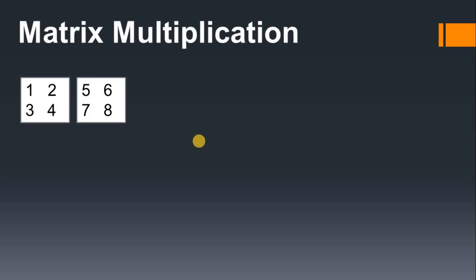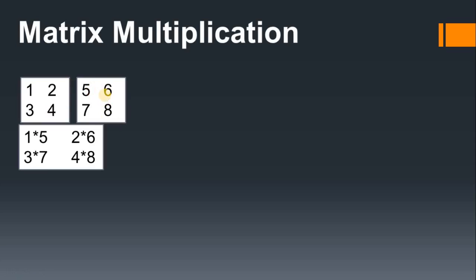Suppose you have two matrices — a simple two-by-two matrix. You can see two rows and two columns in the first matrix. The values are 1, 2, 3, 4 — so the first row values are 1 and 2, and the second row values are 3 and 4. The second matrix has different values.